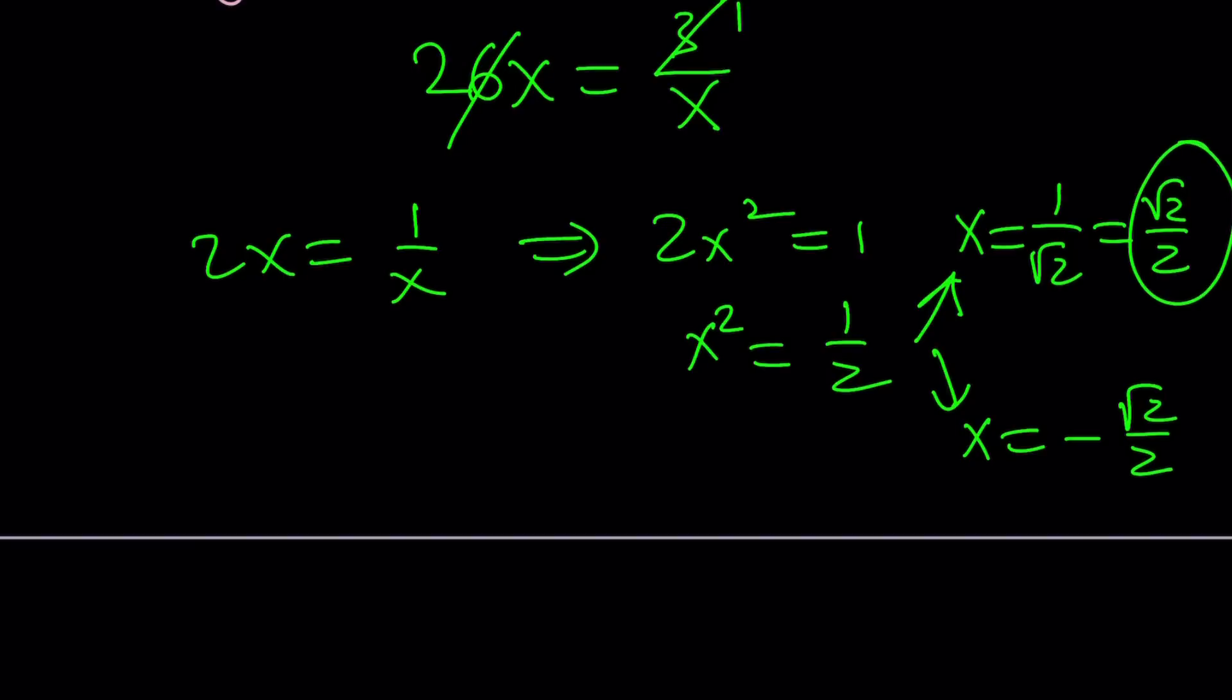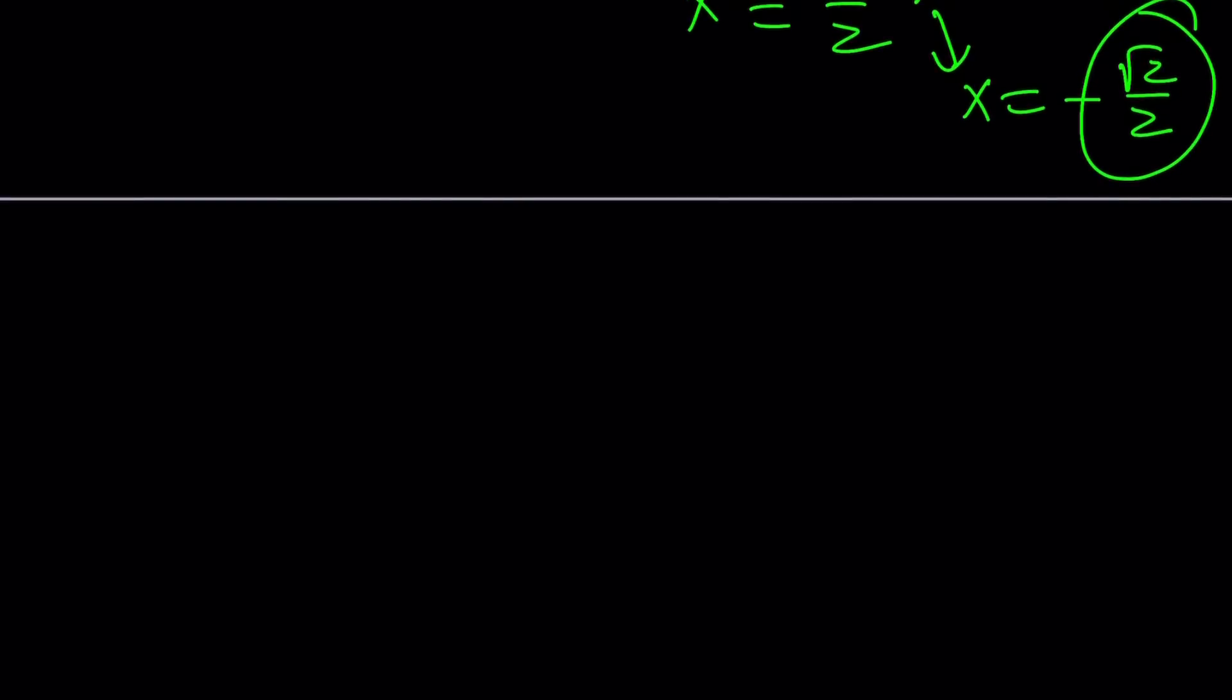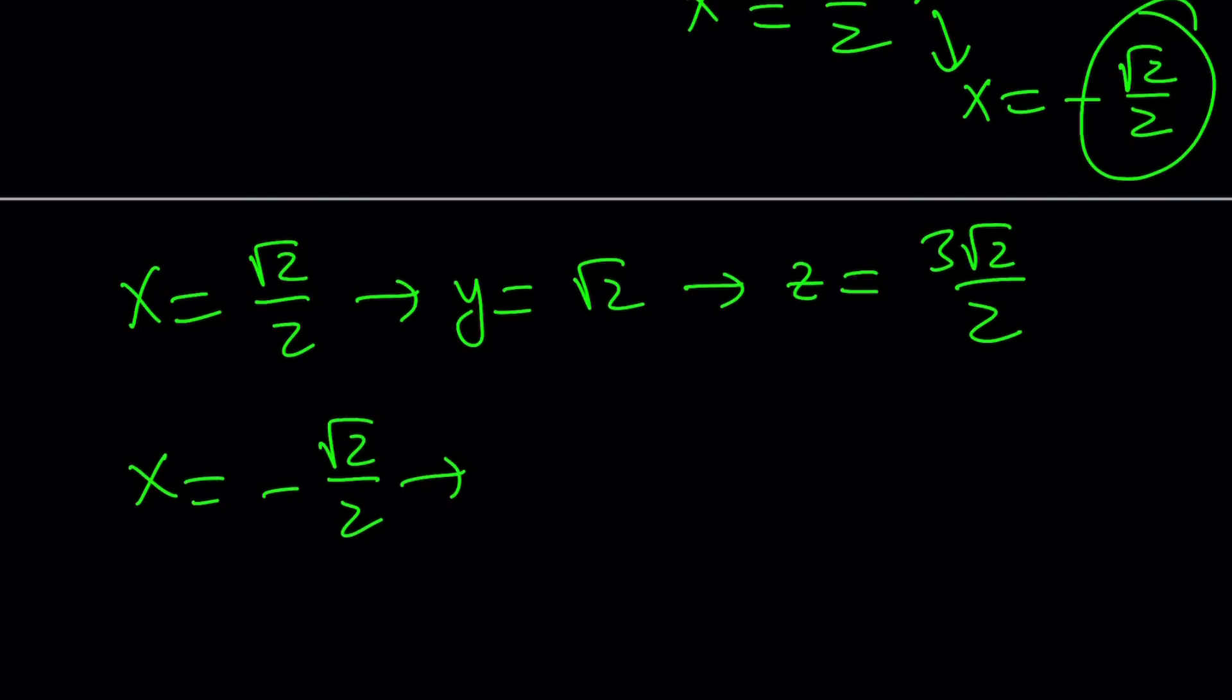And since we know the x values, we can find the y values, because we know that y is 2x and z is 3x. So if x is equal to root 2 over 2, then y is going to be 2 times that, which is root 2. And z is going to be 3 times x, which is 3 root 2 over 2. And if x is negative square root of 2 over 2, then y is going to be negative square root of 2, and z is going to be negative 3 root 2 over 2.